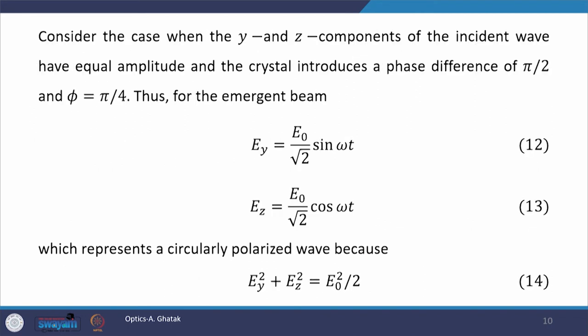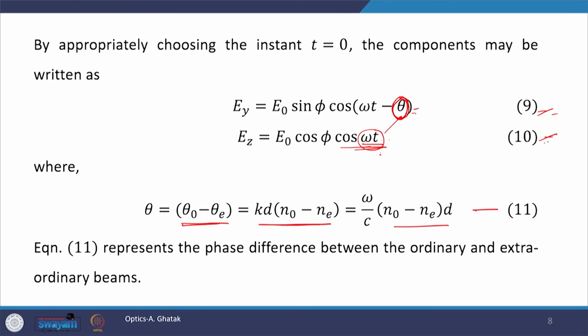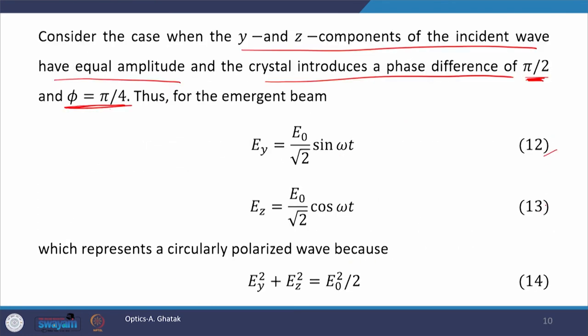As an example, consider a case when the y and z components of the incident wave have equal amplitude and the crystal introduces a phase difference of π/2 (quarter wave plate), and the initial polarization angle φ = π/4. Substituting θ and φ into equations 9 and 10 gives equations 12 and 13. You can readily check that these together represent circularly polarized light — squaring and adding gives the equation of a circle, equation 14.